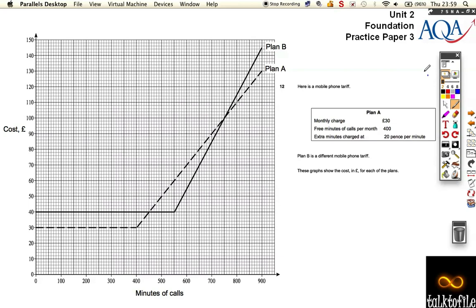Right, okay, question 12. Here we've got a graph of two mobile phone tariffs. In the solid line we've got Plan B, and in this dotted line we've got Plan A.